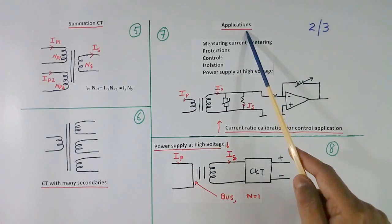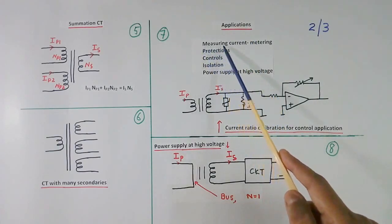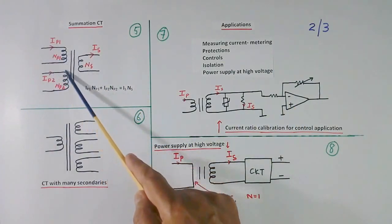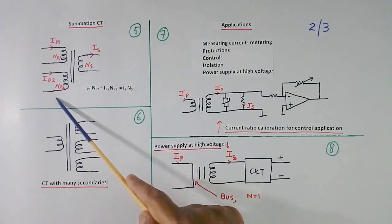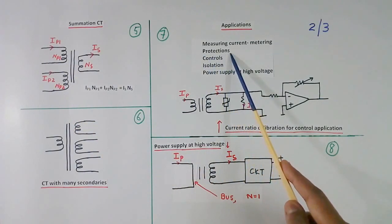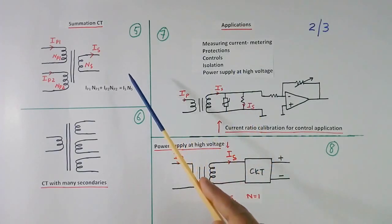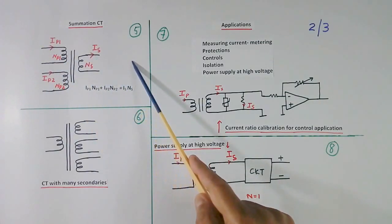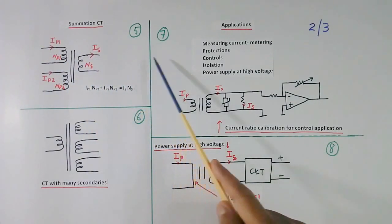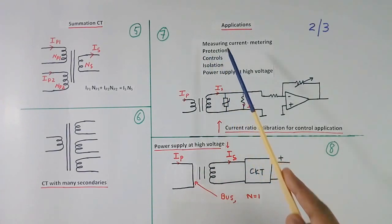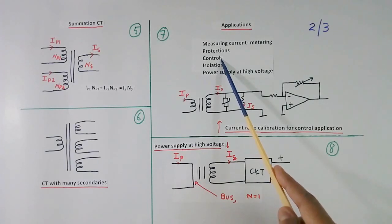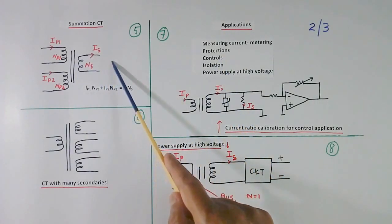Now we come to applications. First application is measuring current metering. We connect 1 ampere meter here. It will indicate the current flowing in the primary or sum of the primaries. Second is protections. Sometimes we have to protect the system from over current or under current here. So this will go to one protection relay. That protection relay will protect the system. Now controls. Suppose you want to control power factor or some other parameter. So the CT output will go to control.